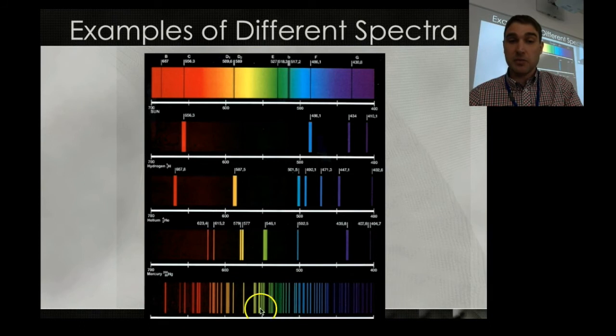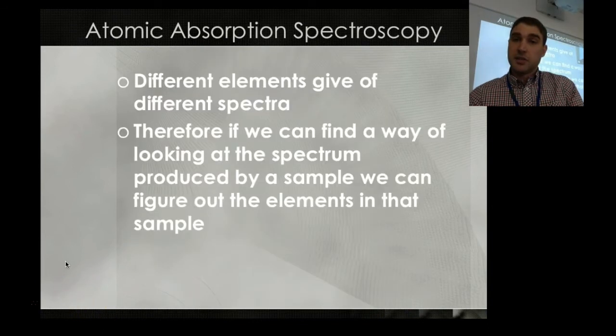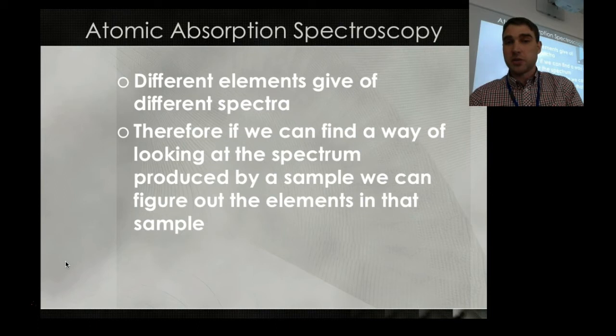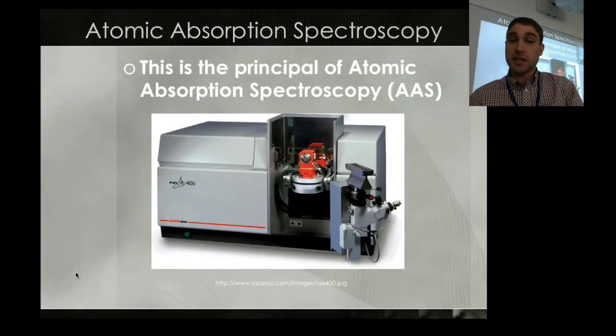Down here we have uranium. We can see uranium's got a lot of electrons, so a lot of energy shells for the electrons to go into as well. The electrons jump up and down, and we get a lot more spectra than we can do for hydrogen or helium. Since different elements give off different spectra, we can find a way of looking at the spectra produced by a sample to figure out if you have that element in the sample. That's qualitative—is there any of this in this sample? And that's the principle behind this machine here called an atomic absorption spectroscope.